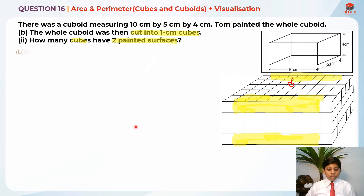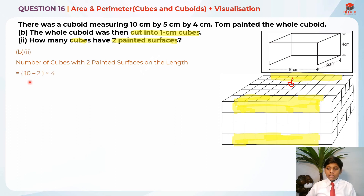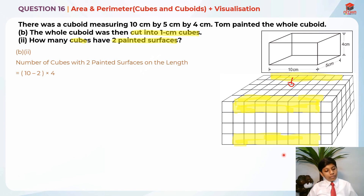For the length edges: each length is 10 cm, minus 2 corner pieces gives 10 − 2 = 8 cubes per edge. There are four such edges along the length, so 8 × 4 = 32 cubes.